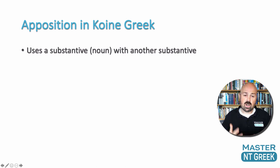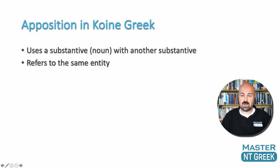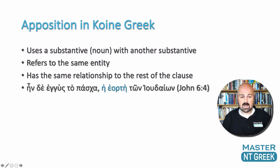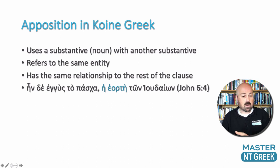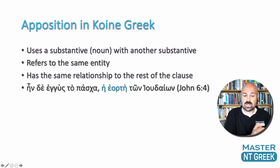Apposition, on the other hand, is not going to use an adjective — it's going to use a substantive, a noun with another substantive. Both of these nouns are going to refer to the same thing, the same entity, with no distinction between them, and they're going to have the same relationship to the rest of the clause. For instance, 'the Passover was near — the Feast of the Jews.' Here 'the Passover' and 'the Feast of the Jews' are both in the nominative, both with the same verb, and both refer to the same thing.